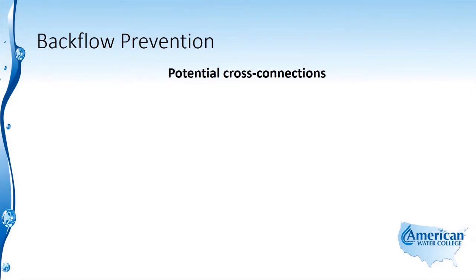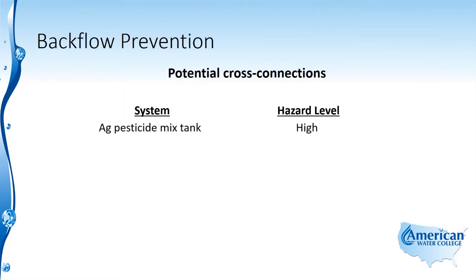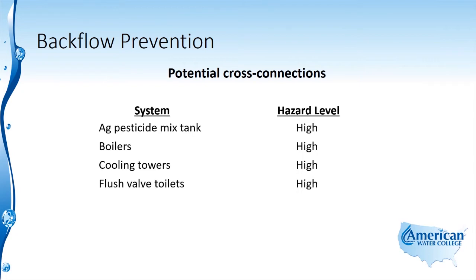Here's a list of some potential cross connections and their associated hazard level. An agricultural pesticide mix tank poses a very high hazard level. Industrial boilers are also a high hazard level. Industrial cooling towers also are at a high hazard level. Toilets with flush valves, or pressurized toilet systems often found in commercial establishments, are potential cross connections and also present a high hazard level.